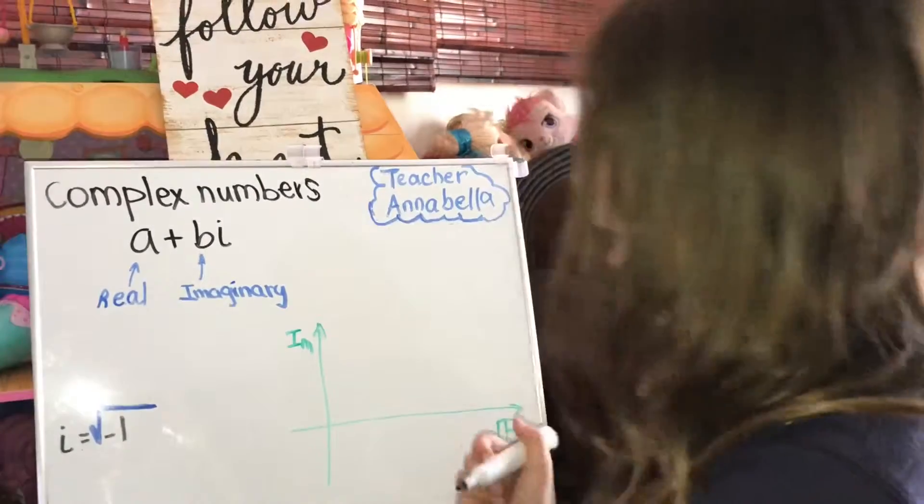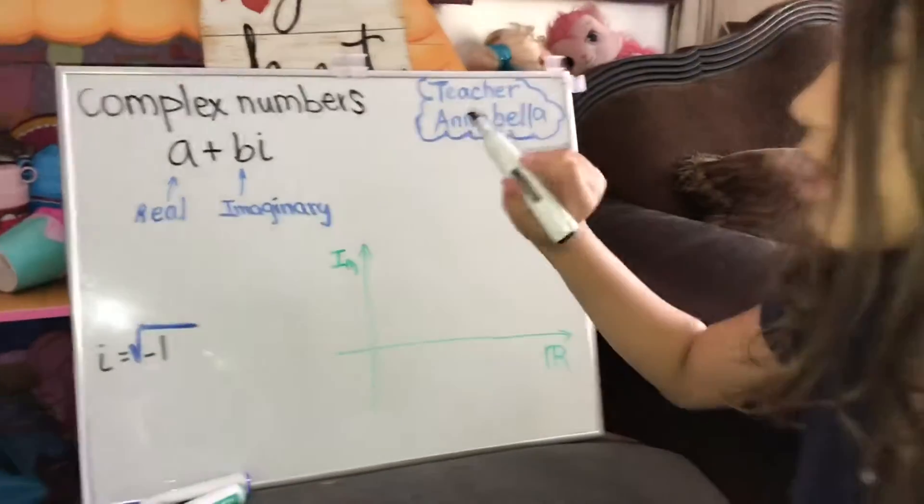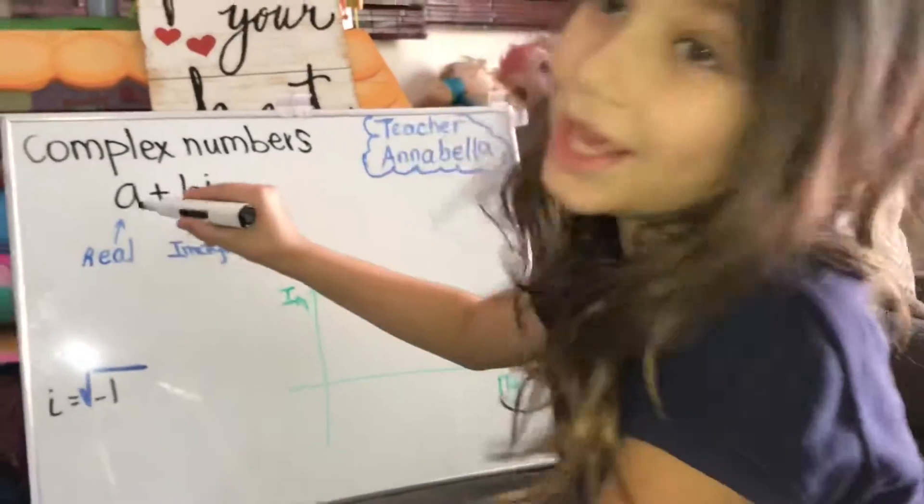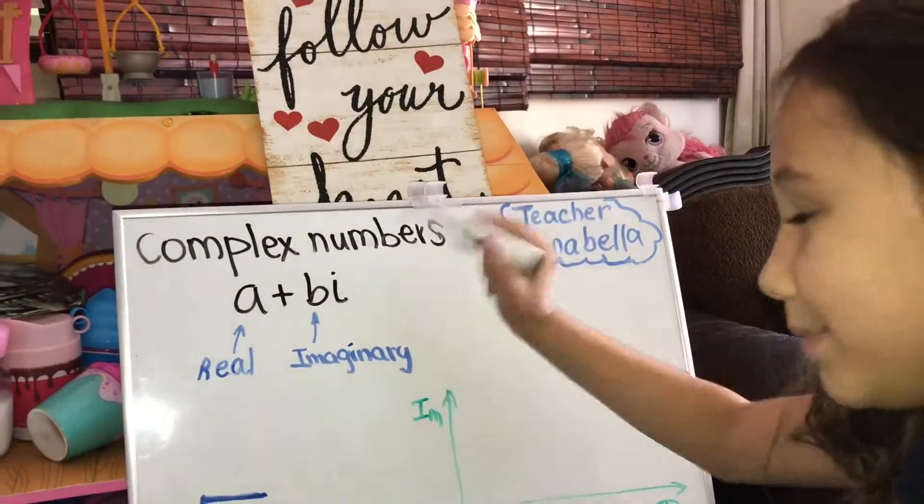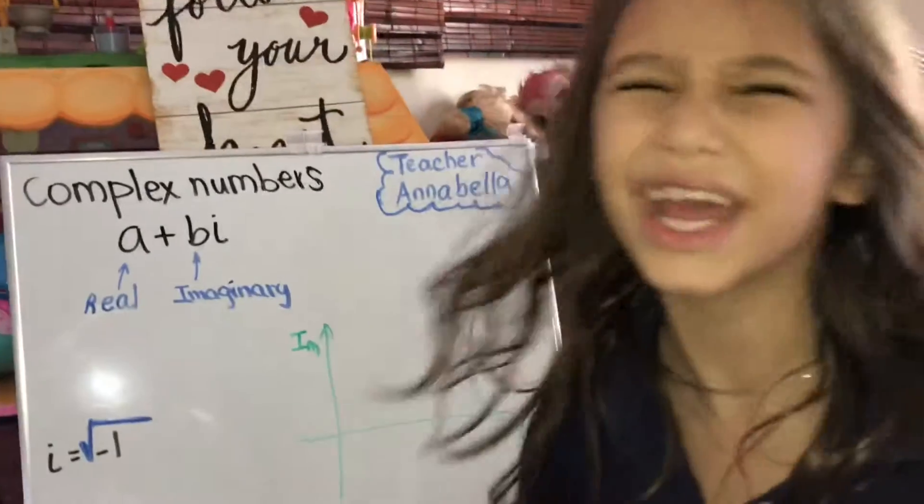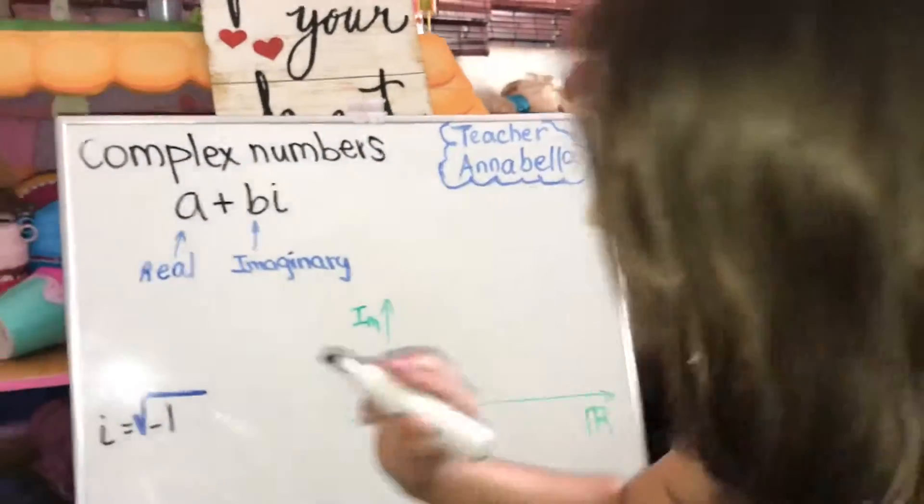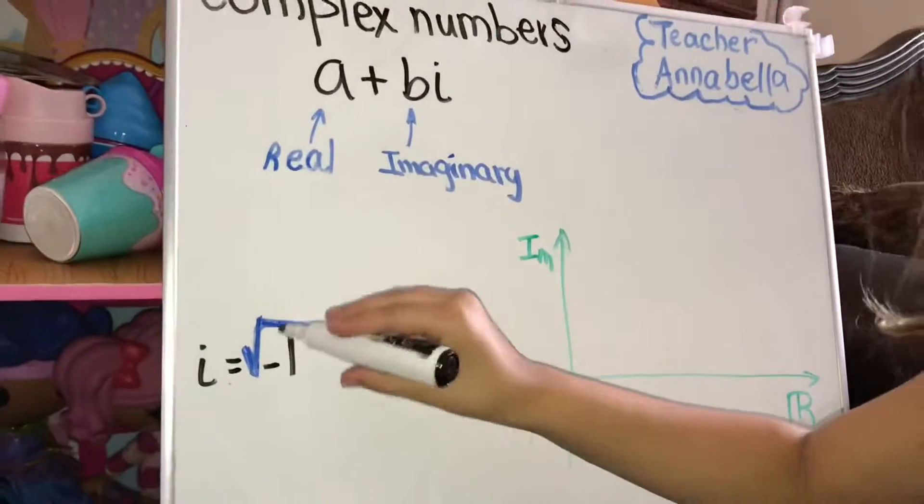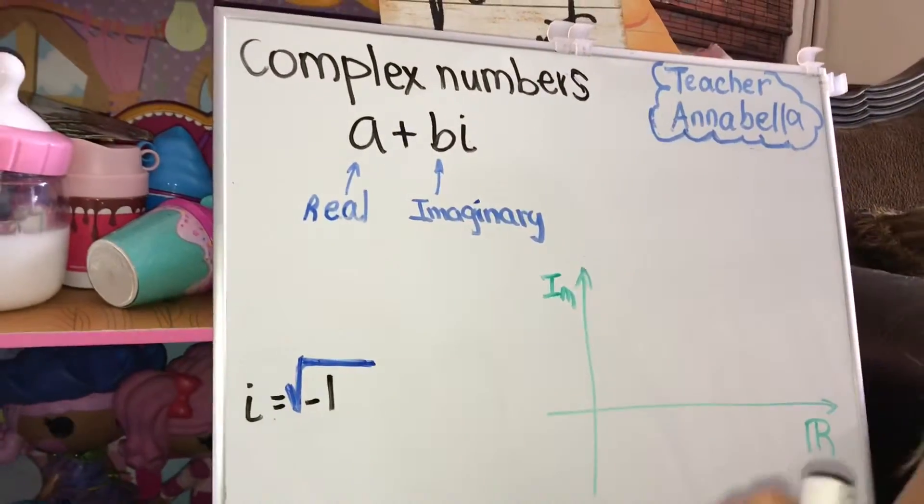We write complex numbers as A plus BI. A stands for our real number and BI stands for our imaginary number. But what is I? I equals square root negative one.